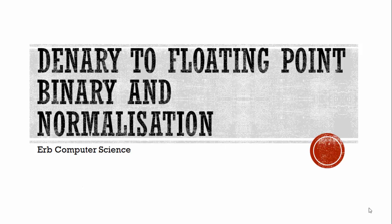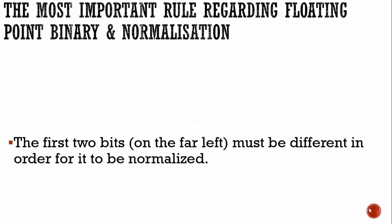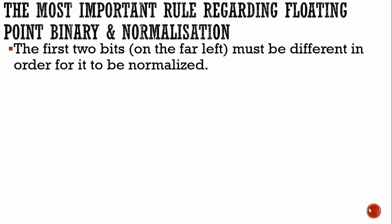When you're talking about normalization, there are some things you need to be aware of. The first two bits on the far left side that are in the mantissa must be different in order for it to be normalized. It must be either 0.1 or 1.0, because the decimal point goes between the first two bits on the far left side. This is what we consider normalized.